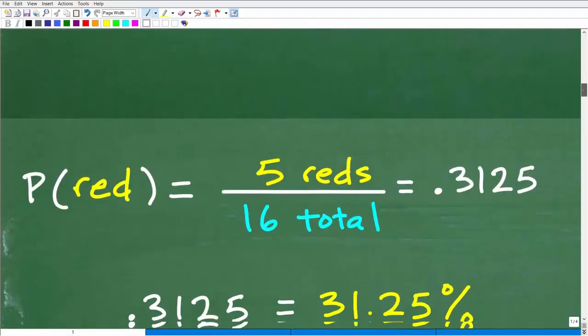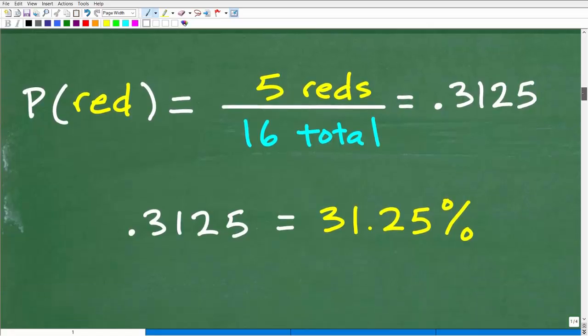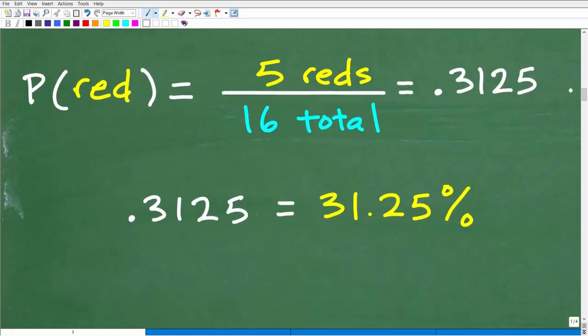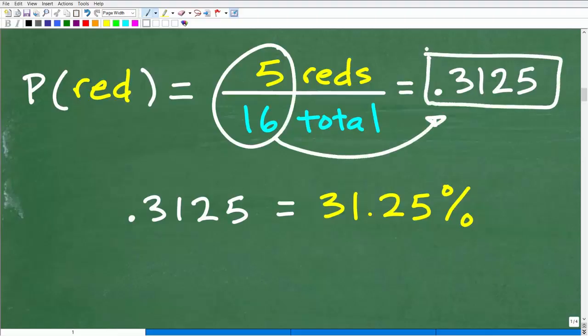But again, most of us are familiar with probability in terms of it being expressed in terms of a percent. So how do we change five into 16 into a percent? We'll just take five divided by 16. We get the decimal point three, one, two, five. So this would be the correct version of the answer. Let's just say if you answered five over 16 or point three, one, two, five, I also would have to give you a nice little happy face.